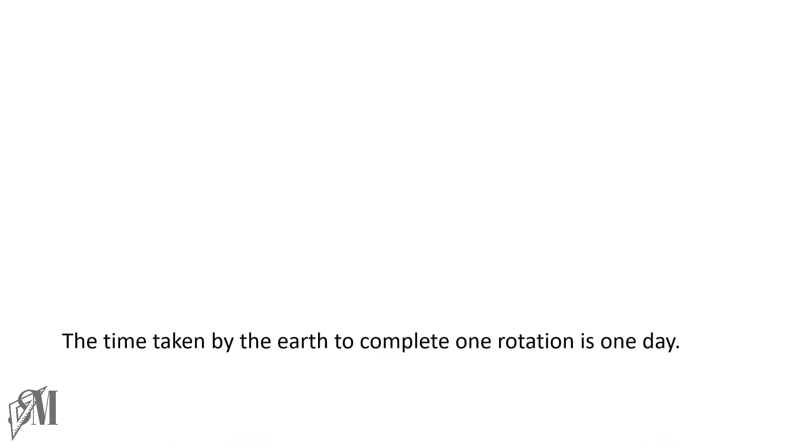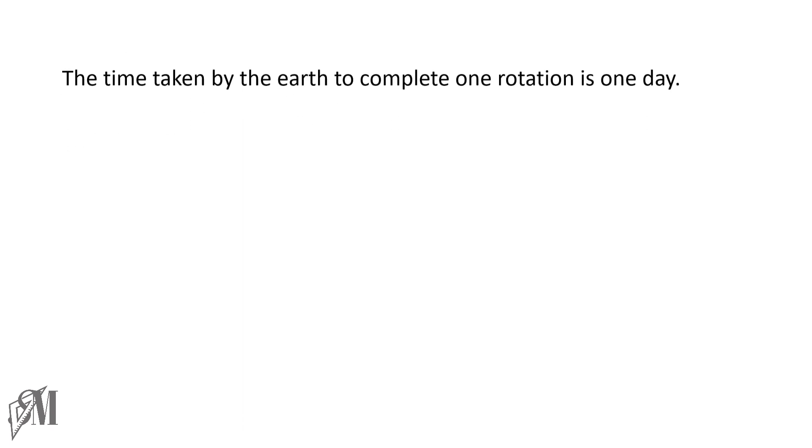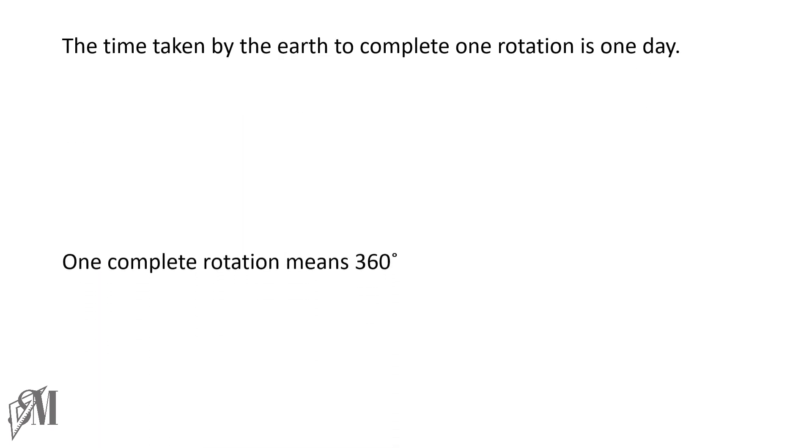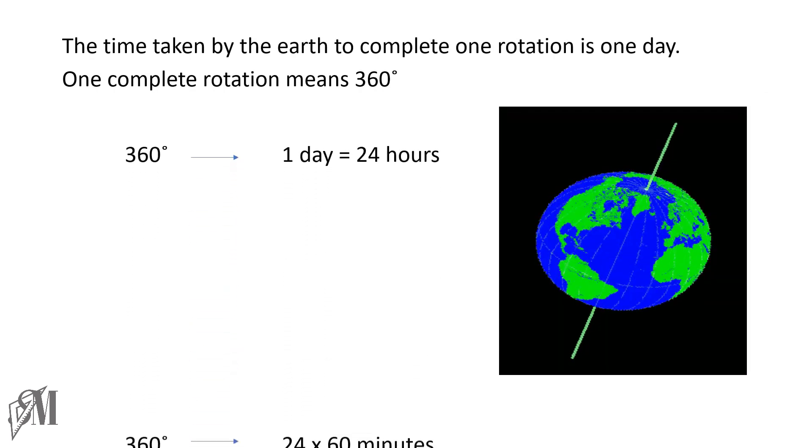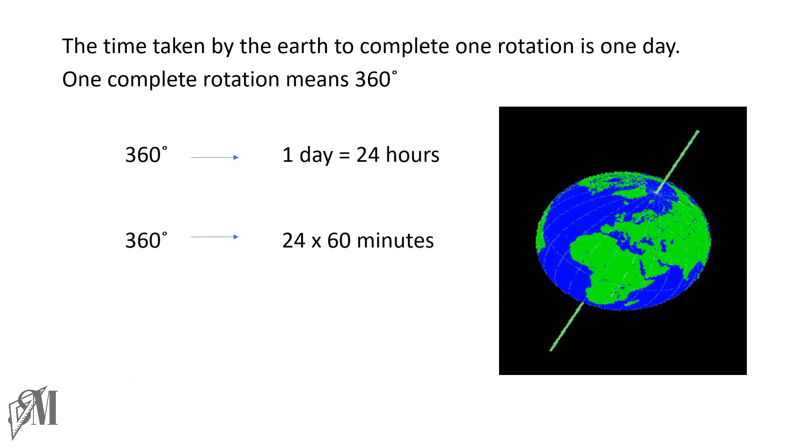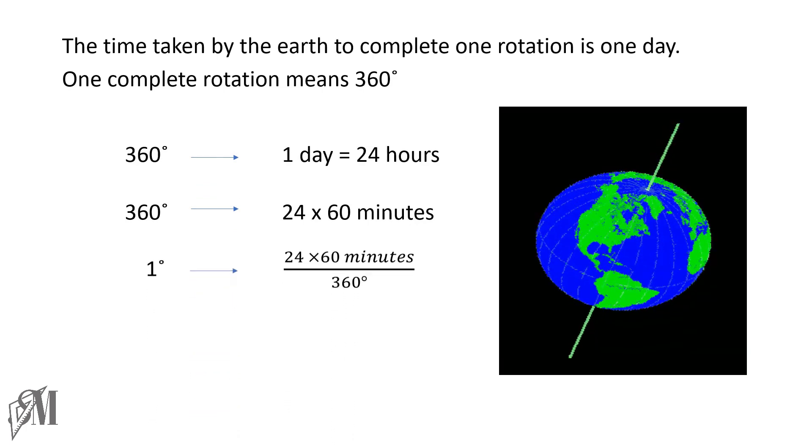The time taken by the Earth to complete one rotation is, as we know, one day, and that one rotation means 360 degrees. To rotate 360 degrees, it takes one day, that is 24 hours, that means 24 into 60 minutes. To complete one degree of rotation, Earth takes four minutes.